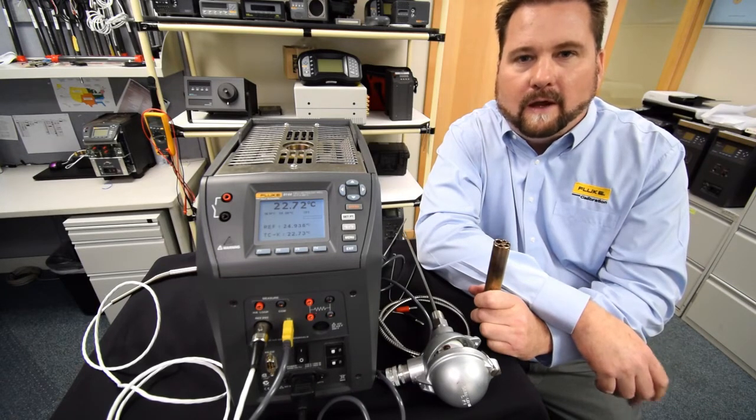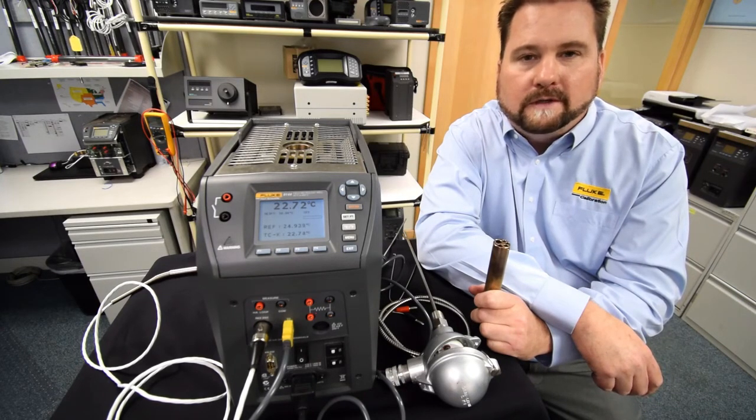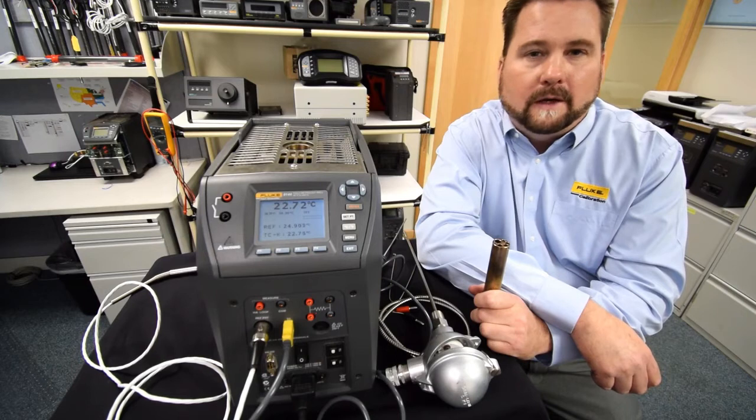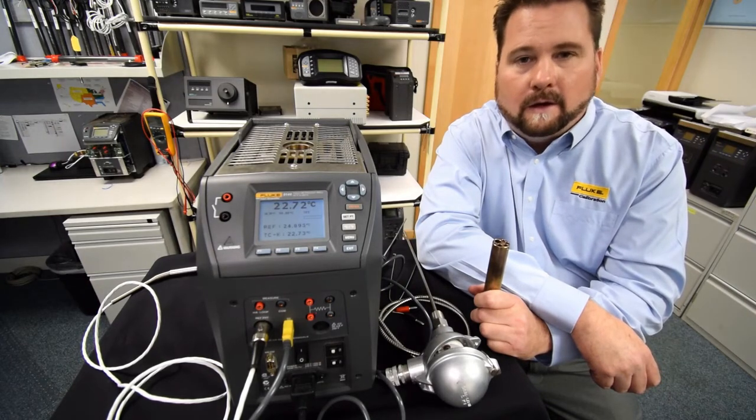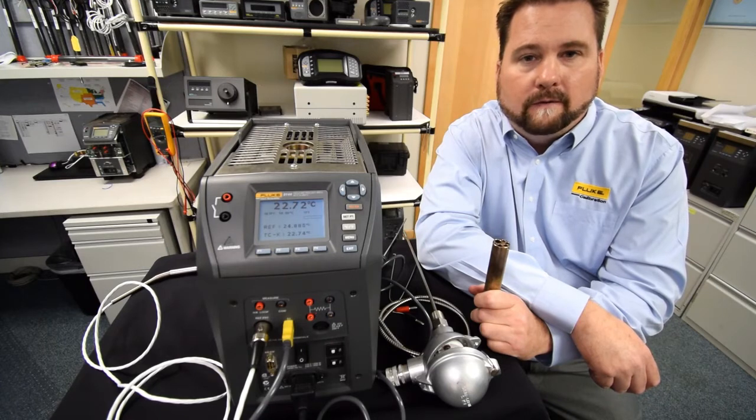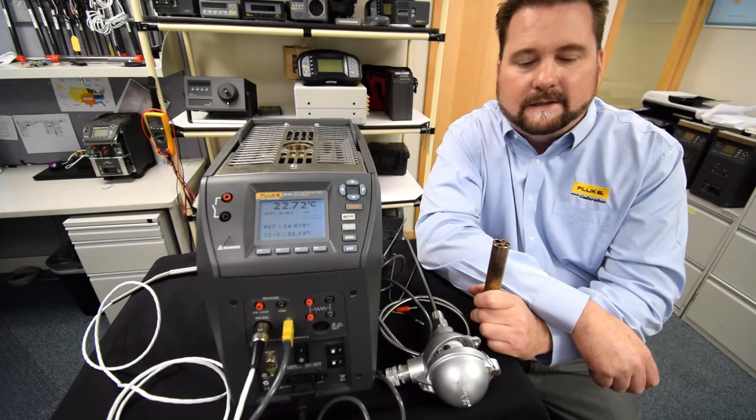The models that we've got are the 9142, which is a minus 25 to 150 unit, or 9143, which is basically ambient 33 to 350 unit. And then the unit here, which is our hot unit, the 9144 that covers 50°C to 660°C.